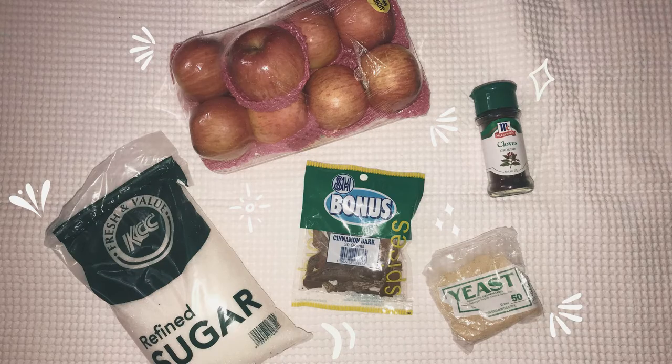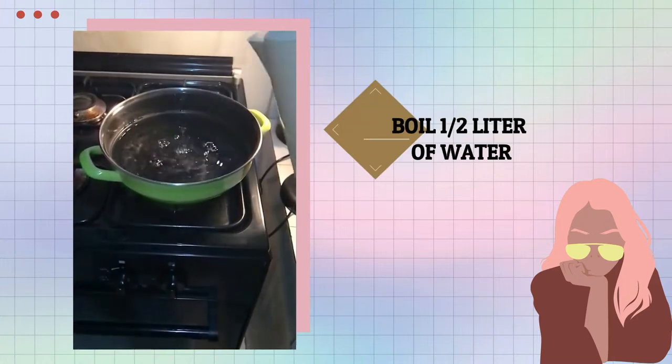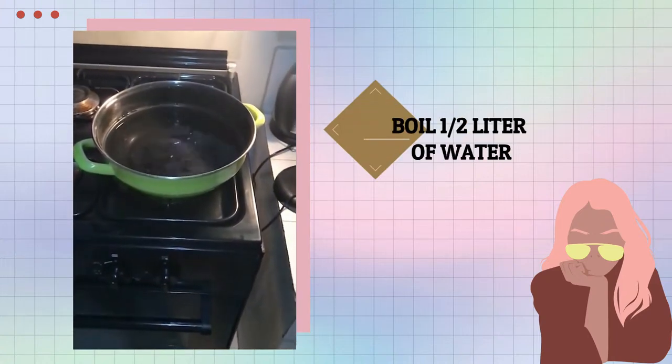Here are the ingredients for winemaking. First, boil half a liter of water.